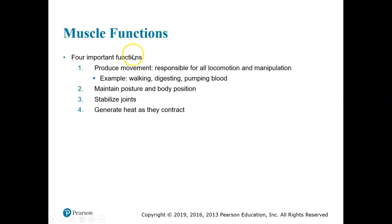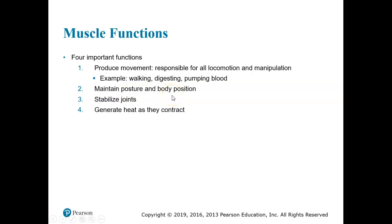Functions of muscle tissue include producing movement — not just movement of the entire individual like walking or picking something up, but also movement of materials through the body, like digesting food and moving waste through the digestive tract. Pumping blood is cardiac muscle function, while moving blood through the blood vessels involves smooth muscle. Moving air through the airways is also smooth muscle. Other functions of skeletal muscle include maintaining posture and position of the body, stabilizing joints, and generating heat as muscles contract.